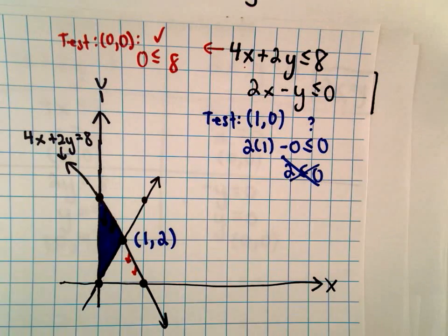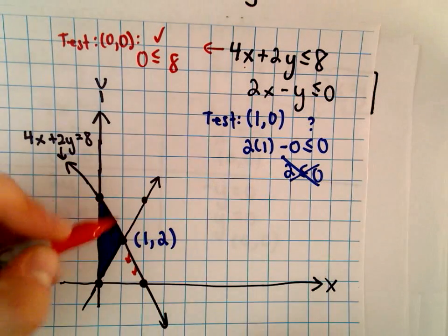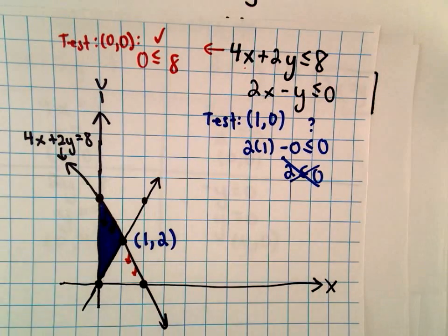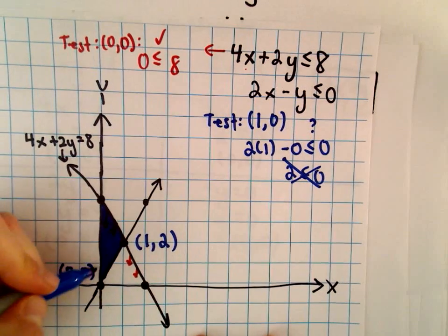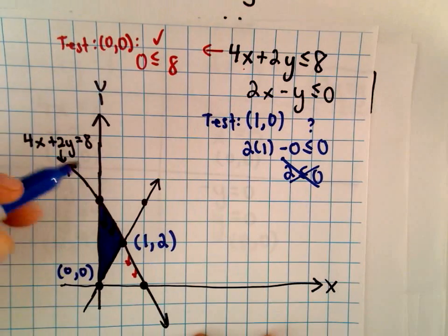Okay, so we can even label all the corner points. We've got 1, 2. We've got 0, 0, the origin. And then we also have the point 0, 4.